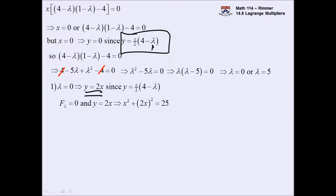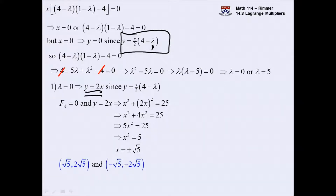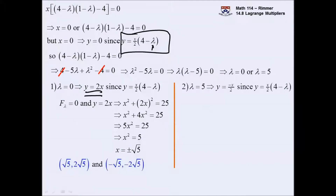Follow that through - go back to your constraint. With y = 2x, we get x² + y² = 25, so x² + 4x² = 5x² = 25, meaning x² = 5, so x = ±√5, and y is double that. Those give two points.